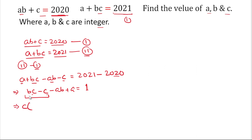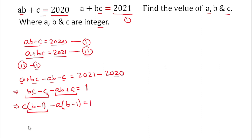Now we factor these terms. From the first two terms bc minus c, we take c common to get c(b minus 1). From the next two terms minus ab plus a, we take minus a common to get minus a(b minus 1). This gives us c(b minus 1) minus a(b minus 1) = 1, and we can factor again to get (b minus 1)(c minus a) = 1.